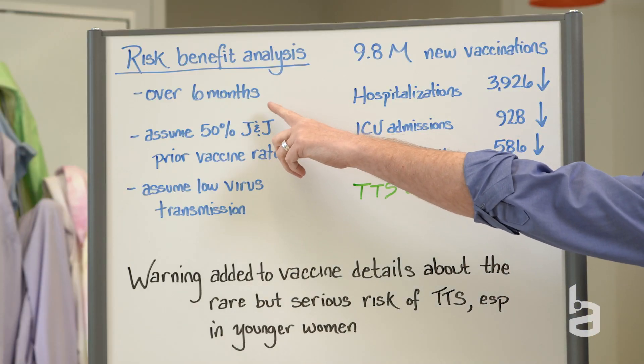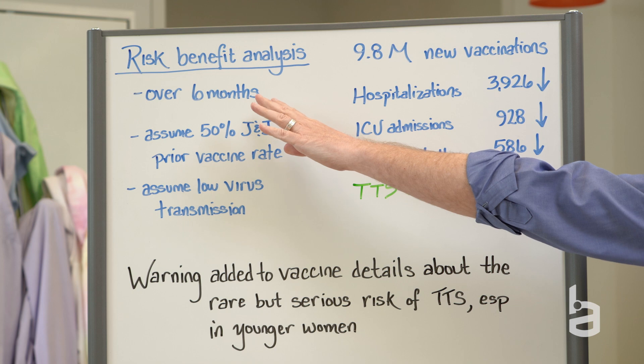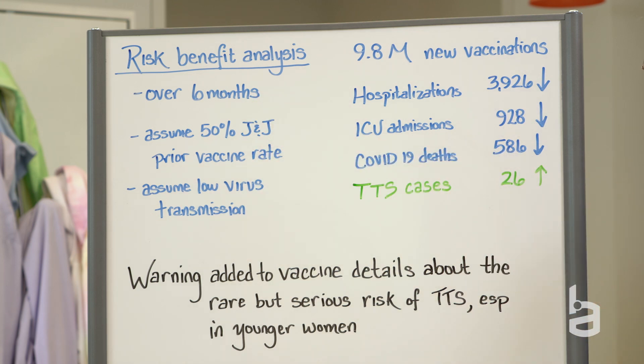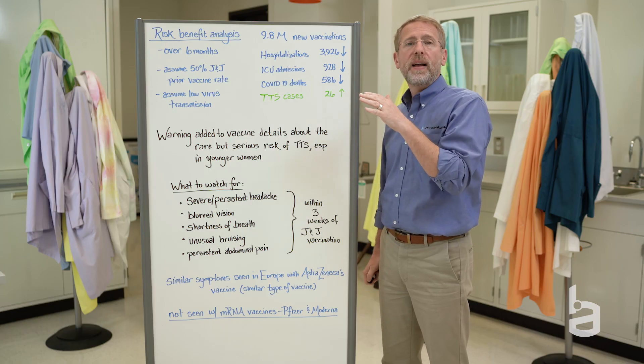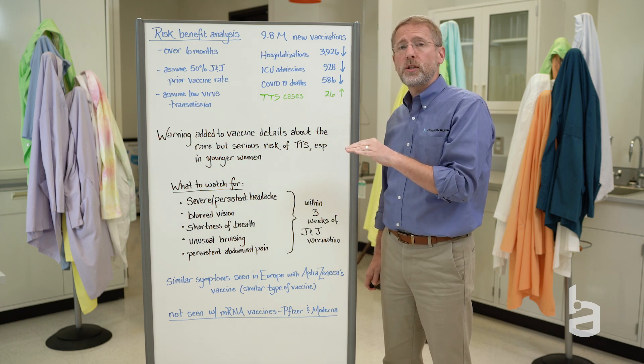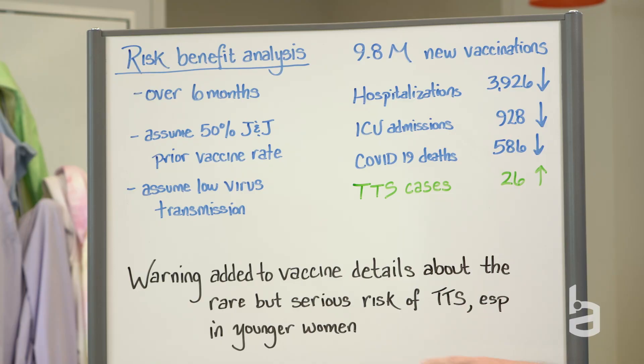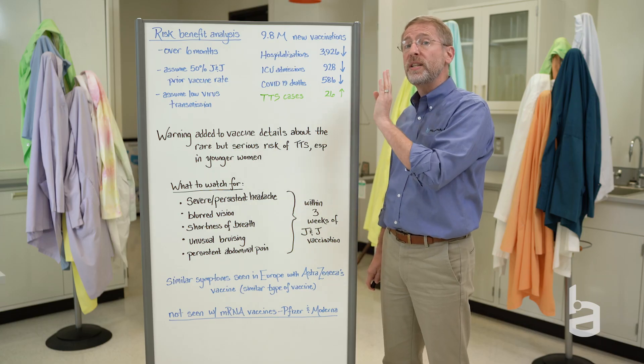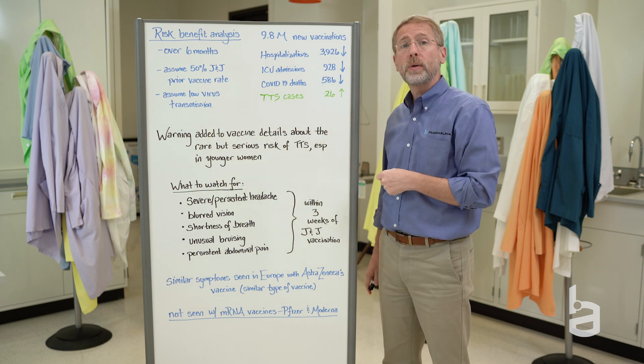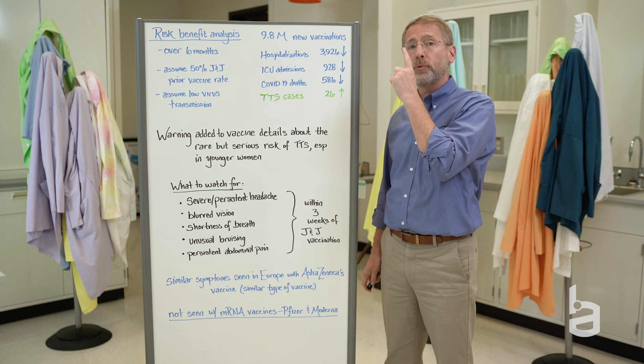So they made some assumptions. They did their modeling for the next six months, so the end of April through the end of October. They assumed that there would be only a 50% vaccination rate for Johnson & Johnson. So in other words, because of vaccine hesitancy or concern about the vaccine, the rate of people getting vaccinated from Johnson & Johnson would be cut in half. And they also made an assumption that over the next six months, the level of virus transmission was low. You can see a different set of models with different assumptions, like higher virus transmission, by going to that reference I showed you at the bottom of the previous whiteboard.